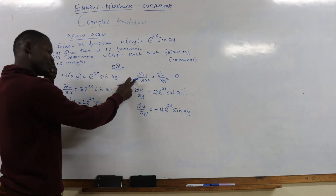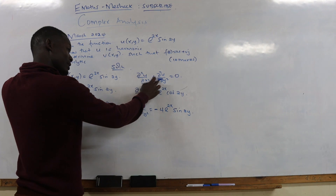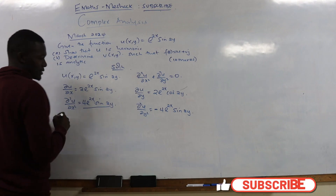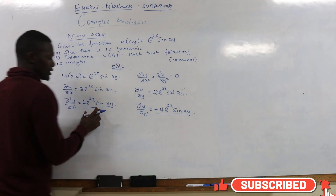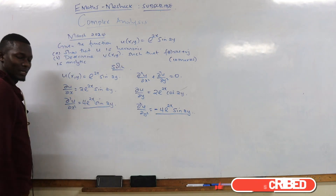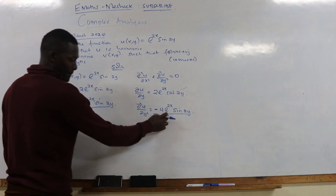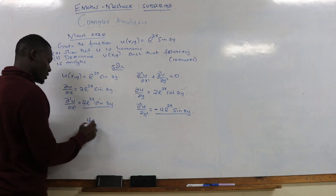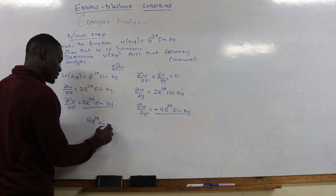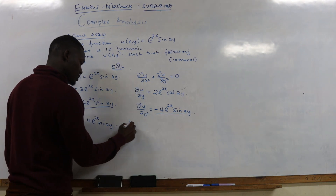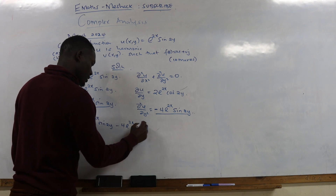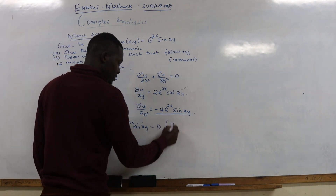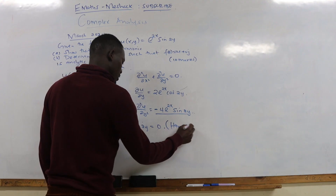We need to prove that d²u/dx² + d²u/dy² = 0. You can see that d²u/dx² = 4e^(2x) sine(2y) and d²u/dy² = -4e^(2x) sine(2y). These two functions are the same but one is the negative of the other, so adding them gives 4e^(2x) sine(2y) - 4e^(2x) sine(2y) = 0. Therefore u is harmonic.